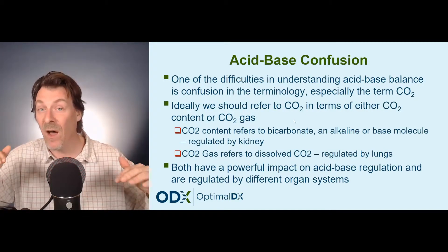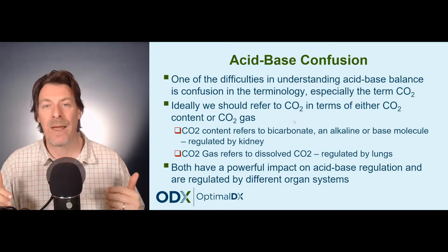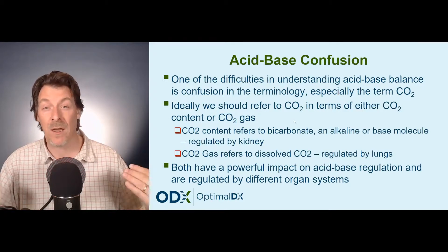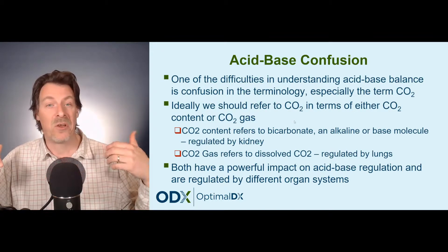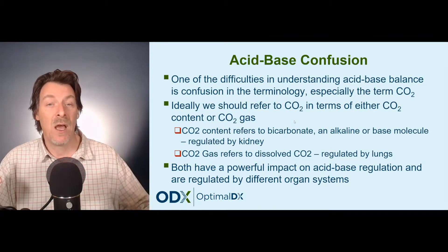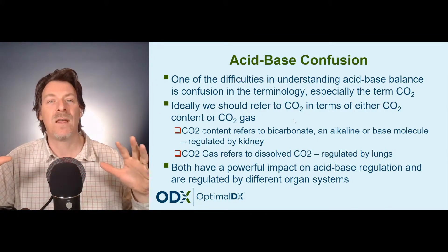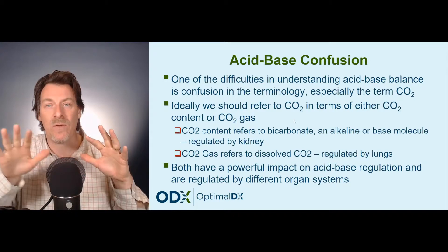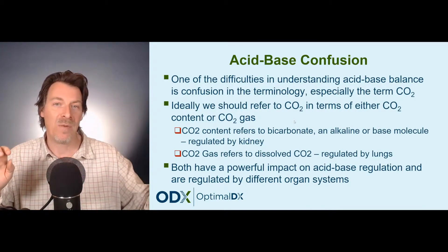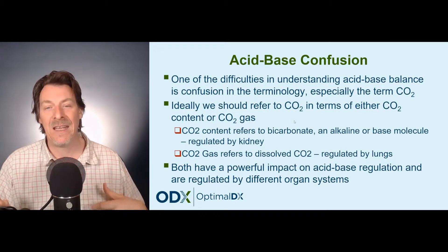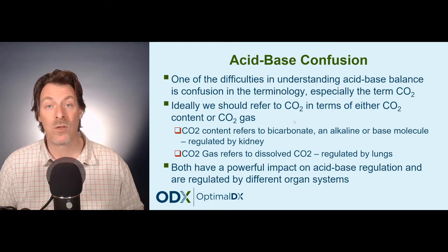It gets complicated very fast, and I do cover this in a bit more detail in my in-office lab testing book. If you're interested in diving into this in more detail, you can look at in-office tests: urine pH, salivary pH, respiratory rate, and breath-holding time. Looking at the ratios between those four things can steer you whether the patient is moving towards acidosis or alkalosis, whether we're looking at compensatory respiratory or compensatory kidney activity.